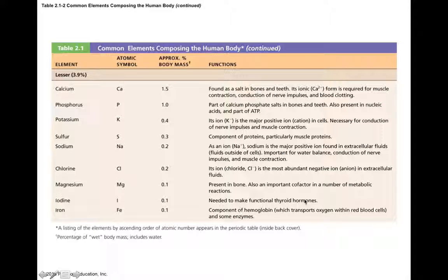Iodine is needed to make thyroid hormone. Although it only counts for 0.1% of our body mass, we need enough iodine to make thyroid hormone to regulate the metabolism of our body. Iron, denoted as Fe, is a component of hemoglobin, which is necessary for the transportation of things like oxygen and carbon dioxide within red blood cells. It's also a necessary cofactor for some enzymes. We need enough iron in our diet in order to have adequate homeostasis.